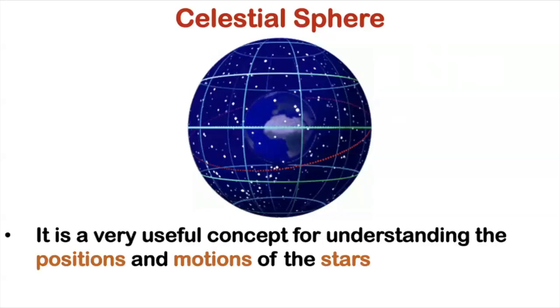Now, celestial sphere is a very useful concept for understanding positions and motions of the star. So as you can see, the celestial sphere has poles, just like the Earth. So it also has an equator, just like the Earth.